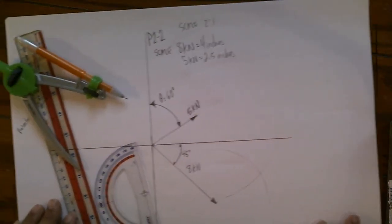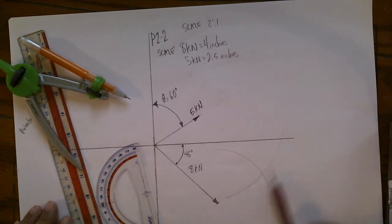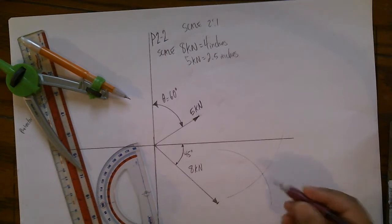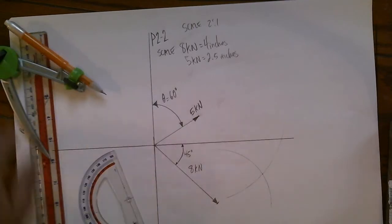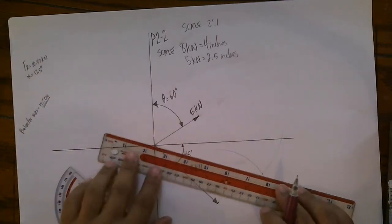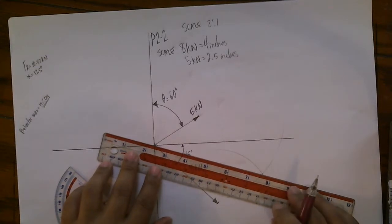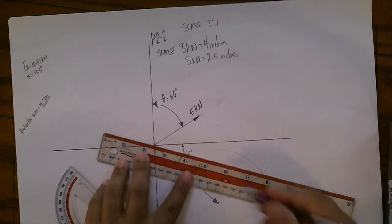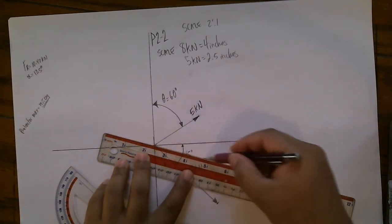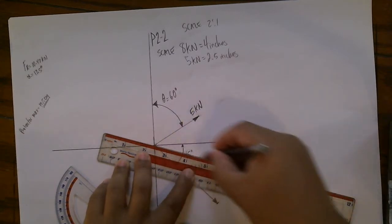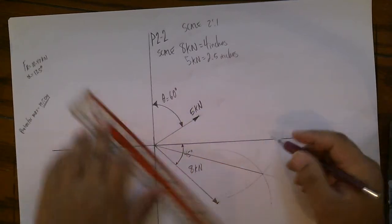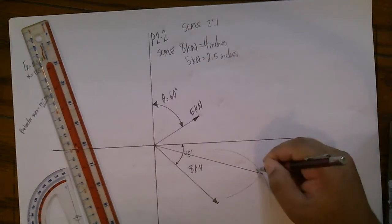And as you can see, these two parts of the circles meet here, right here. So what you do is take your ruler, draw a line from the origin all the way to that point there. That's the end of your vector for your resultant force.